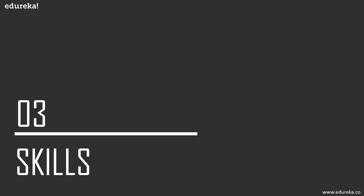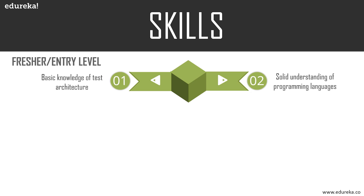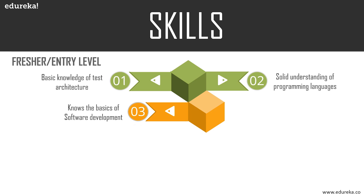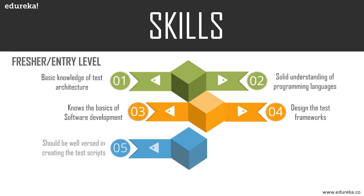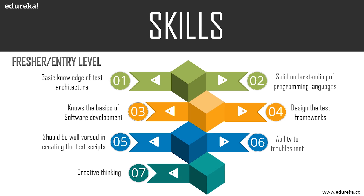Now let's find out what skills an organization looks for when hiring software testers. Automation testing requires base knowledge of manual testing, because without understanding manual processes you cannot perform automation reliably. For a fresher, the required skills include basic knowledge of test architecture, solid understanding of computer languages like Java, Python, and C#, familiarity with software development, ability to design test frameworks, create test scripts, troubleshoot equipment problems, and perform complex system tests, as well as creative thinking and communication skills.